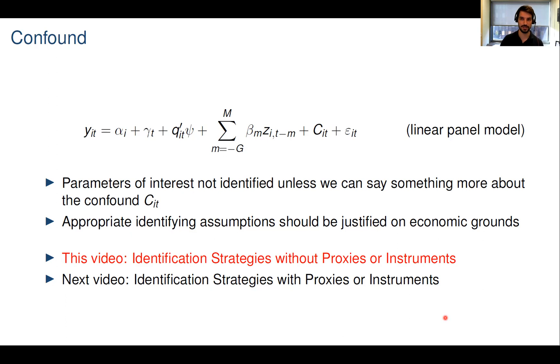The C_it is the interesting part and can lead to endogeneity. You can think of it as an unobserved confound, and that's how we're going to refer to it throughout. It may be related to both the policy z and the outcome y. Because it's unobserved, the parameters of interest beta are not going to be identified unless we can say more about this confound. So in order to identify beta, we need to make additional assumptions. These identifying assumptions are restrictions on this confound.